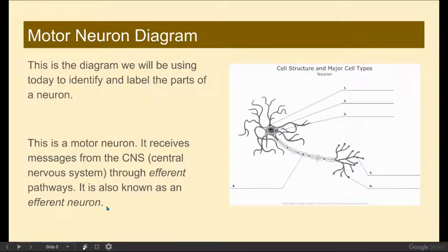This is the diagram we're going to be using today to identify and label the parts of the neuron, and you will find a copy of it in your packet. This happens to be a motor neuron. It is myelinated, and it receives messages from the central nervous system through efferent, or motor, pathways — so it's also known as an efferent neuron.